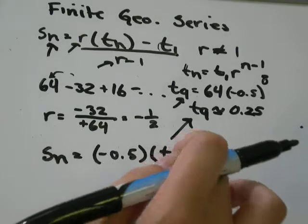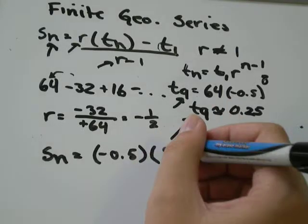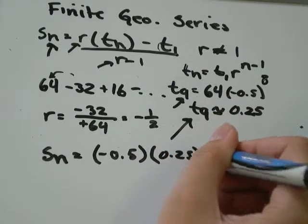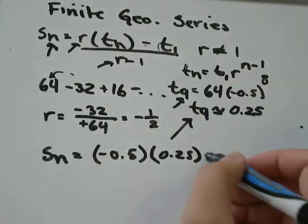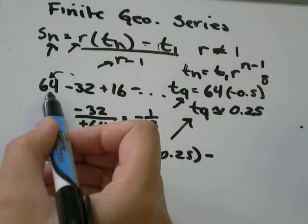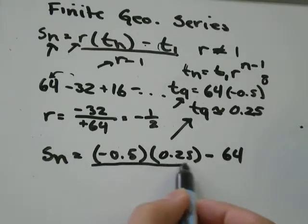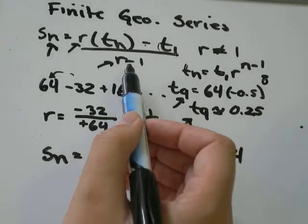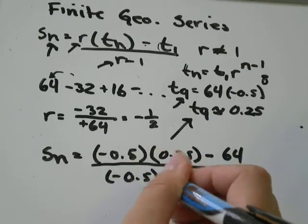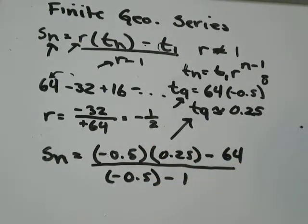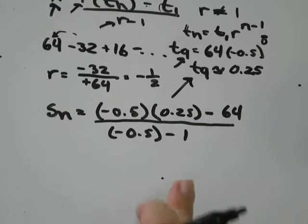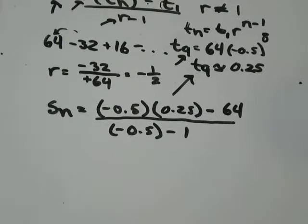So I'm going to plug that into my formula. 0.25 minus T1, T1 was positive 64. And all of that divided by R minus 1. R was negative 0.5 minus 1. I'm going to go up a little bit.